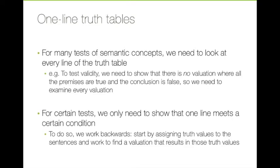To construct these one-line truth tables, we're going to work a little bit in reverse from the way we normally do. We're going to start by assigning truth values to the sentences we're interested in and work backwards to find a valuation that gives us those truth values. The challenge is that we have to be a little bit creative — we have to reason about what assignments of truth values to the simple statement letters, the atomic sentences, make the sentences come out with the right truth values. So let's look at some specific cases.